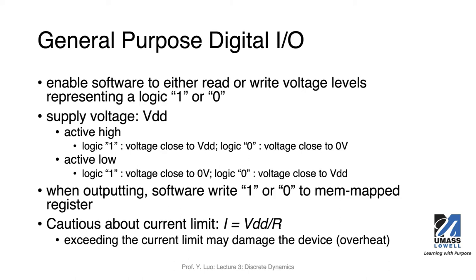We often use VDD or VSS to refer to the supply voltage. It depends on the microcontroller you use — it could often be 5 volts or 3.3 volts. Either way, you will need to understand what we mean by active high or active low. In active high, when logic one is referenced, the corresponding voltage is close to VDD, the supply voltage, and logic zero is close to zero volts.